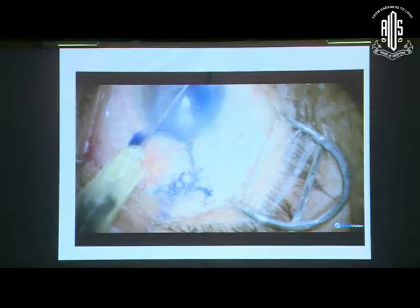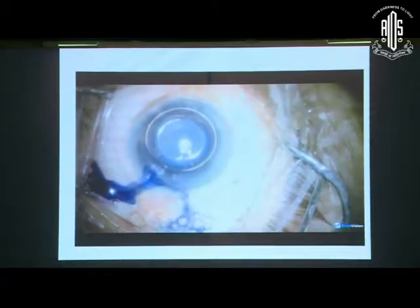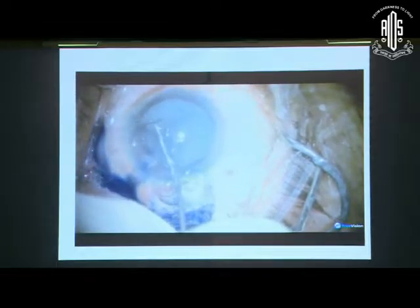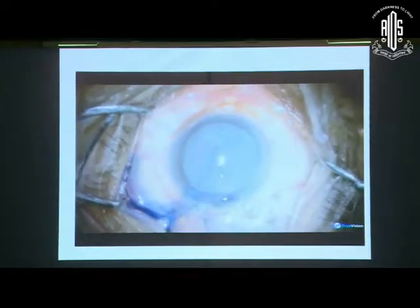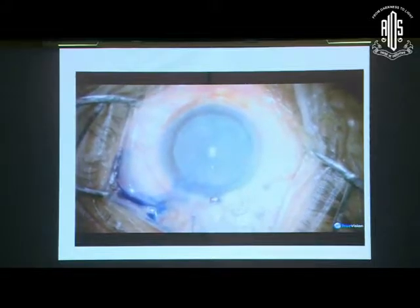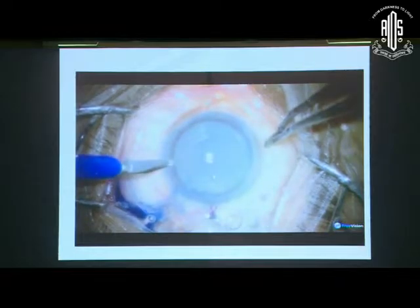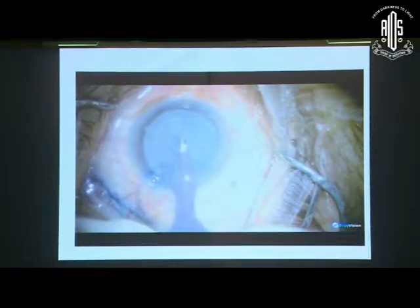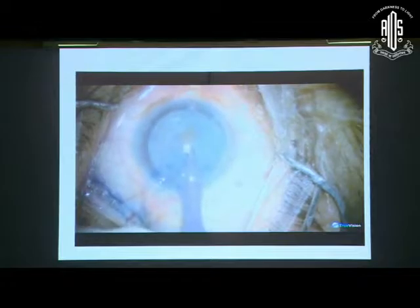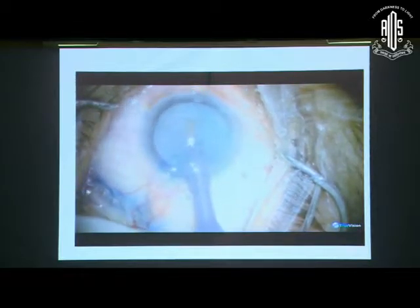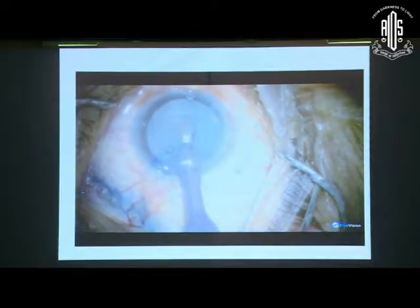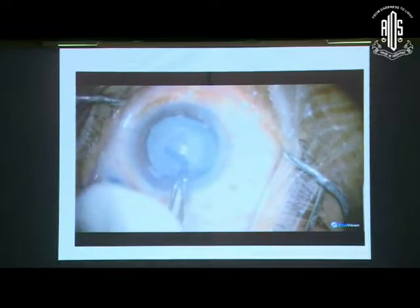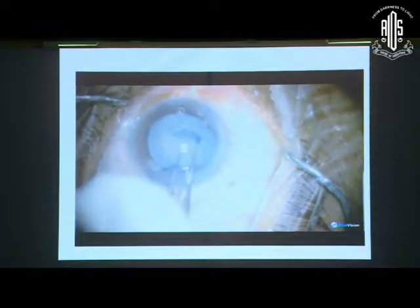What can we do if we do not have FEMTO? One option already being discussed is the phaco punch — taking the phaco probe bevel down with a non-torsional ultrasound system and without a Kelman tip. However, despite everything, what we find is that at times there is still an Argentinian flag sign. Despite best efforts, this can lead to extension of the capsulorexis. I tried this method in a few cases — I was successful in some but not in others. So this is also not a foolproof method.